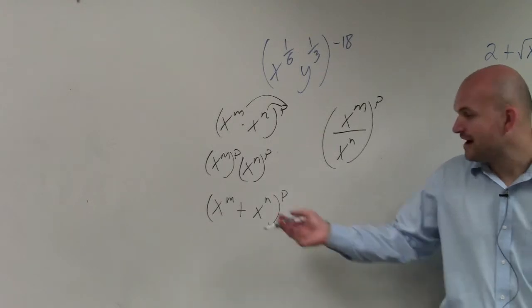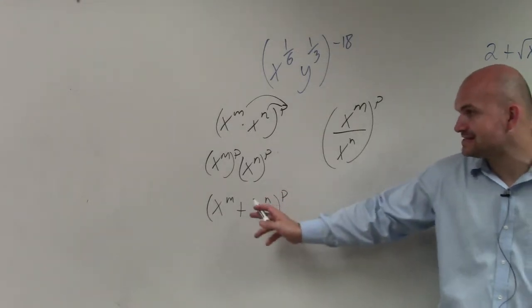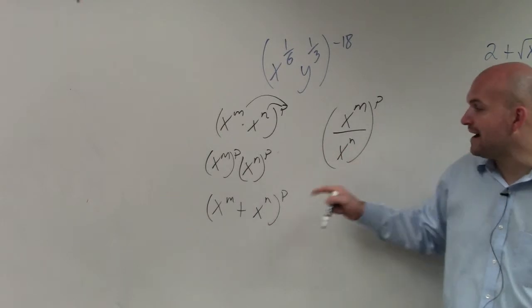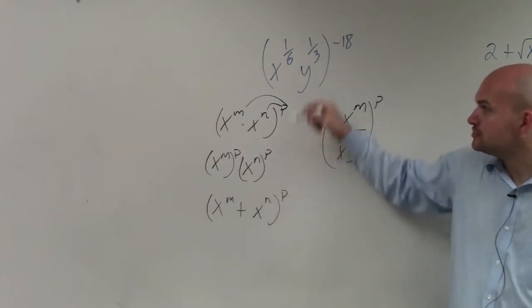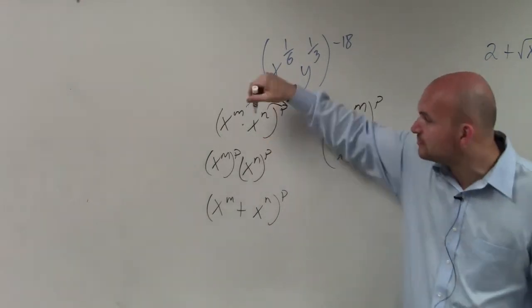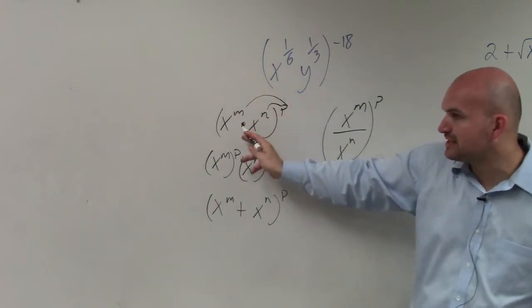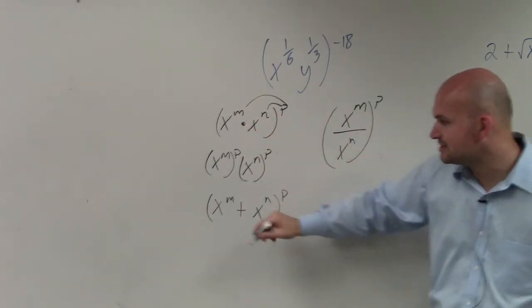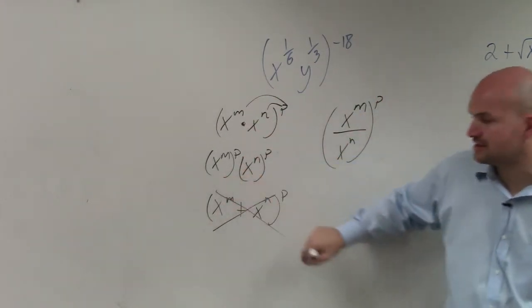Right? If I had this, I would have to multiply this binomial by itself p times. You can only do this power to product when it's across multiplication or division. This does not work across addition.